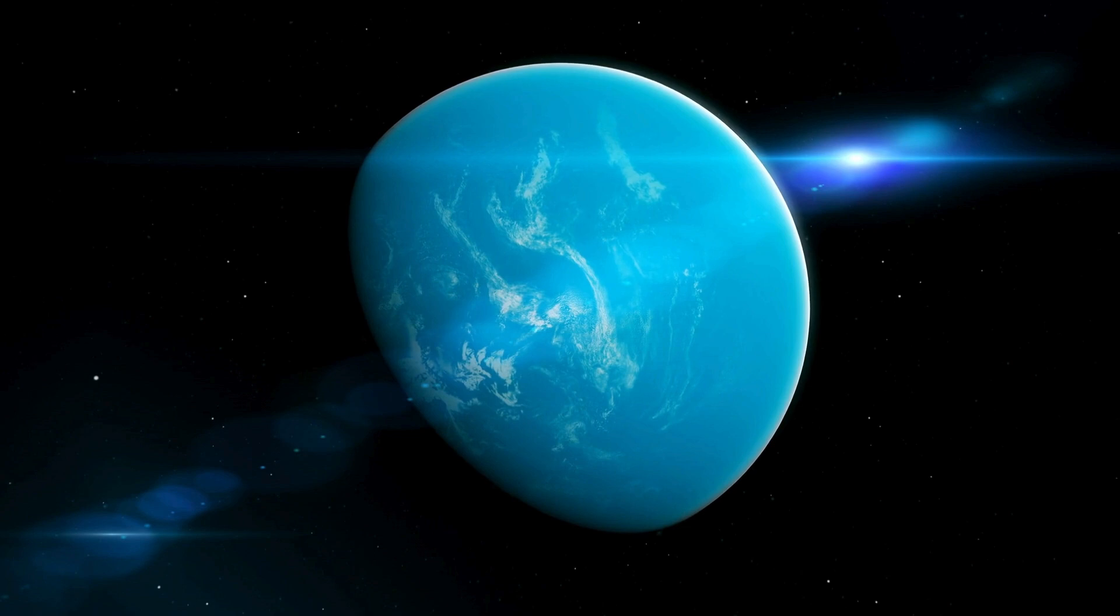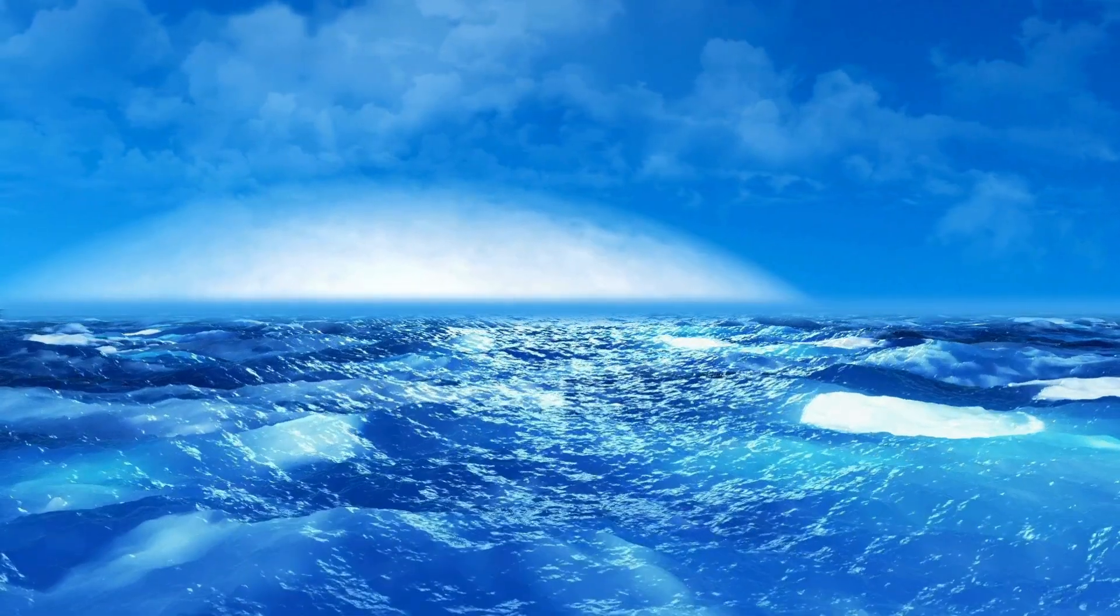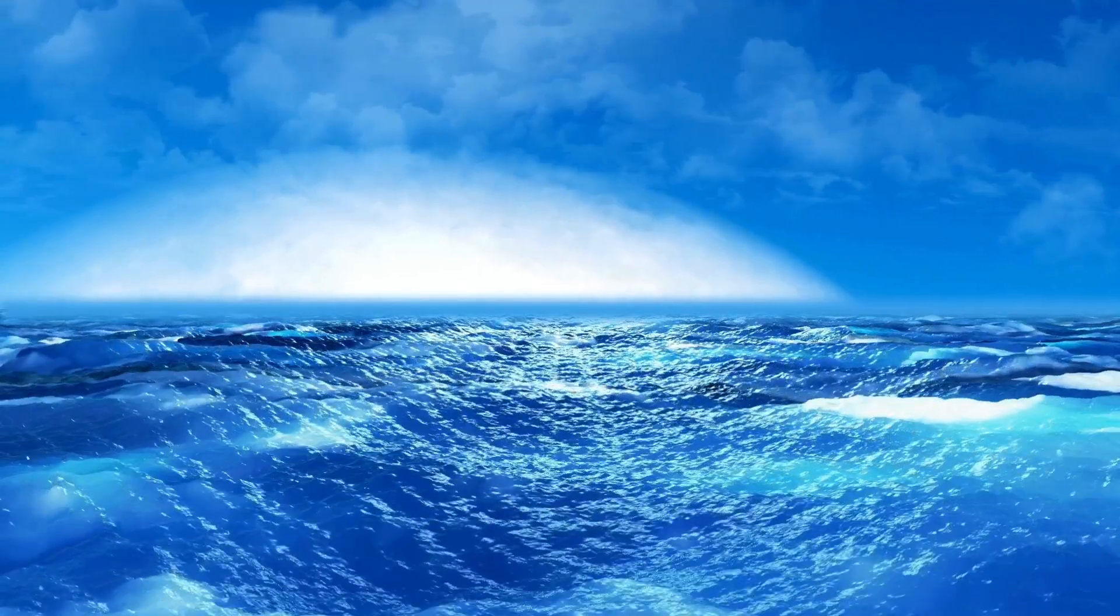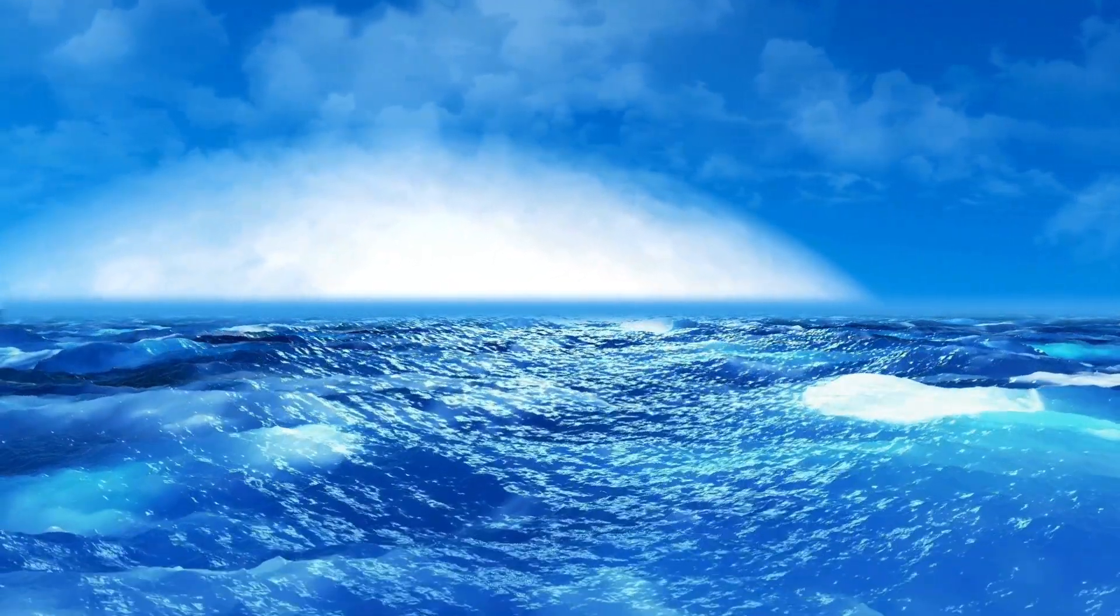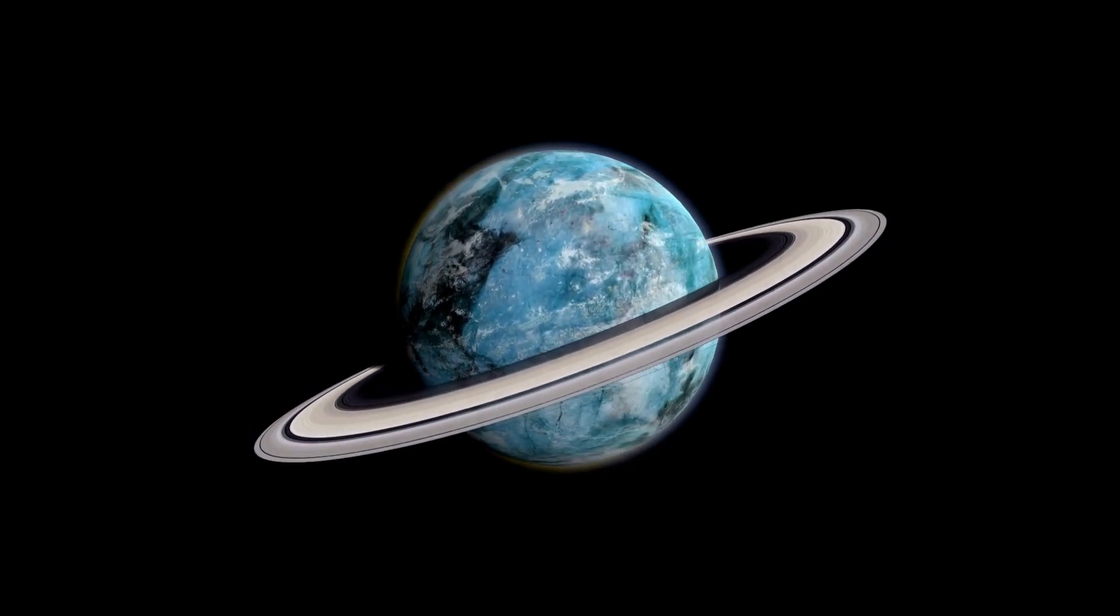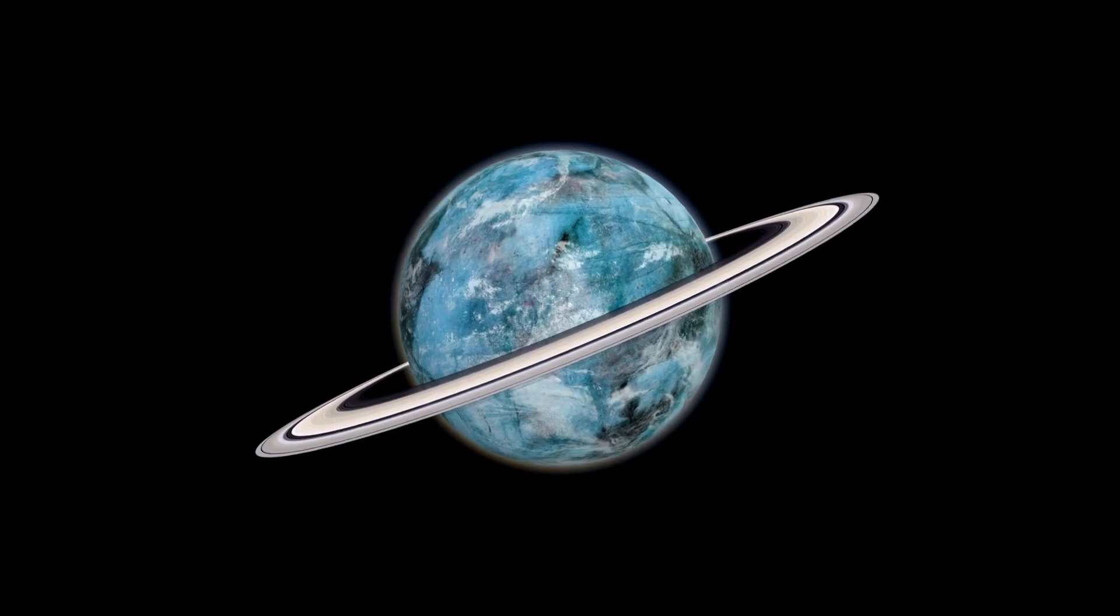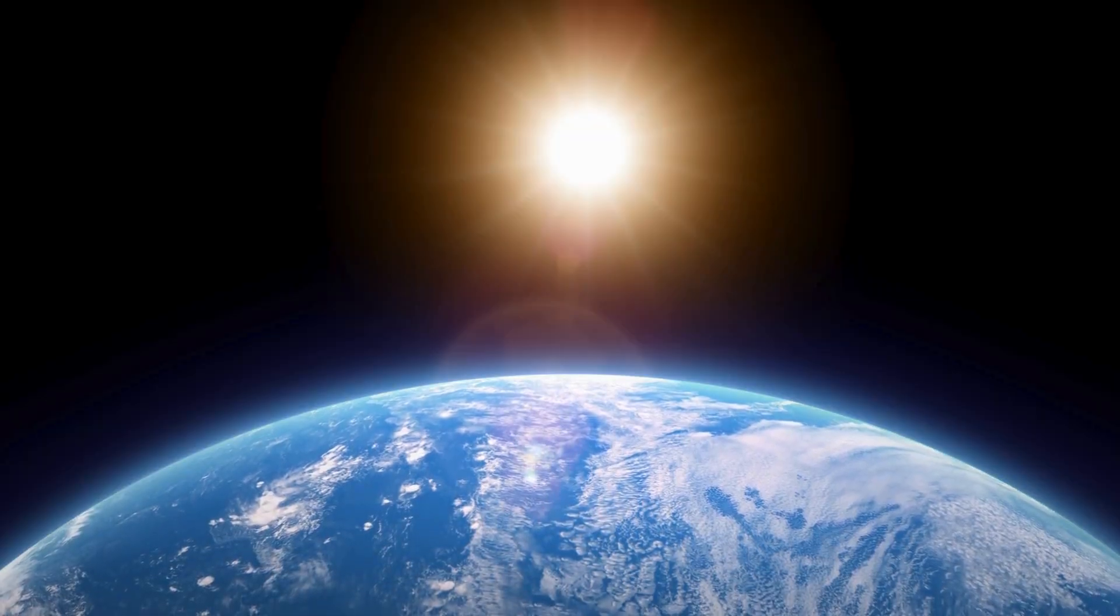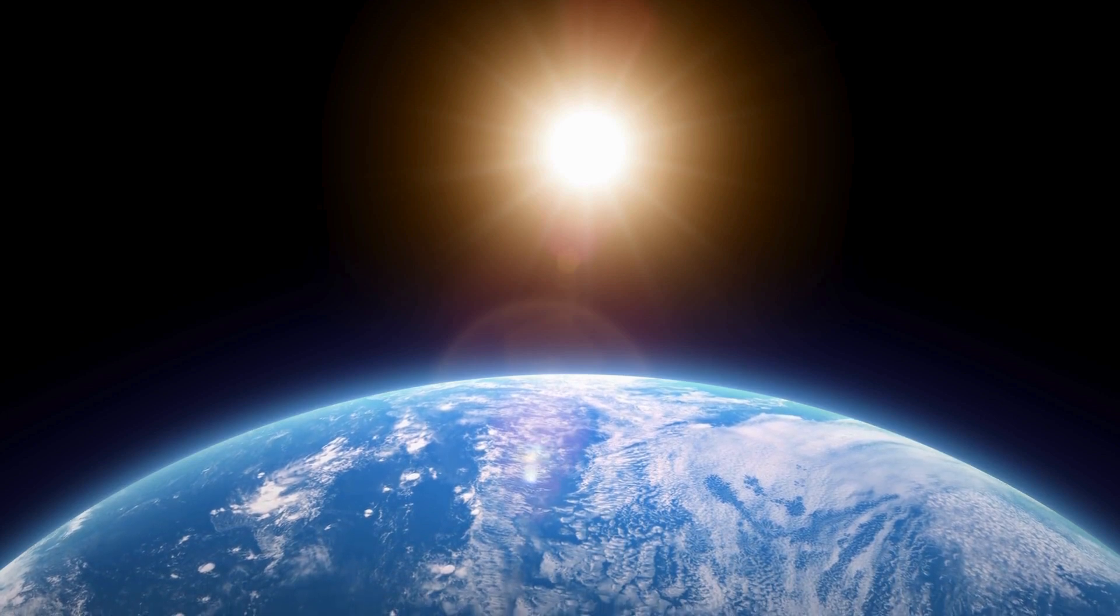As we venture beyond our own solar system, we discover a whole new world of exoplanets, planets that orbit stars other than the Sun. With 206 billion stars in the universe, the possibilities of exoplanets are endless. Some exoplanets even roam free, untethered to any star, like rogue travelers in space. But among them all, Proxima Centauri b stands out as a truly remarkable and enigmatic planet.